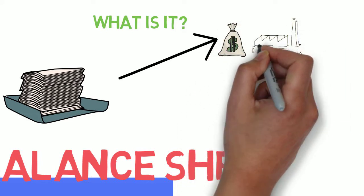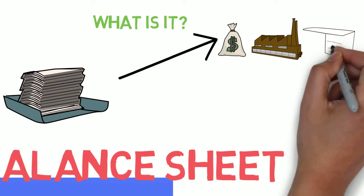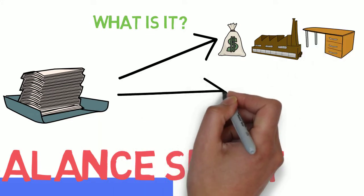Assets can be anything like cash, plants, buildings, equipment, anything like that would normally be common under assets.